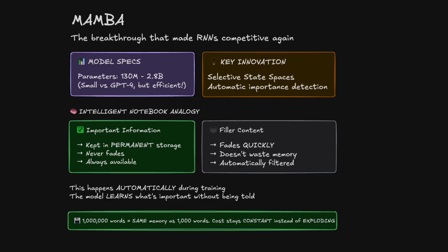Mamba, developed by Albert Gu and Tri Dahl, is the breakthrough that made RNNs competitive again. The original Mamba models range from 130 million to 2.8 billion parameters. While these seem small compared to GPT-4, they can process sequences that would cause transformers to run out of memory. Think of how Mamba operates as creating an intelligent notebook that automatically decides what to remember. When Mamba encounters important information, it keeps it in permanent storage. When it sees filler content, it lets it fade away quickly. The model learns what's important without being told. For companies processing legal documents, scientific papers, or code bases, use cases that may be economically impossible with transformers become way more affordable with Mamba.